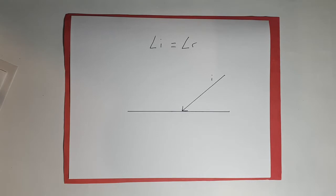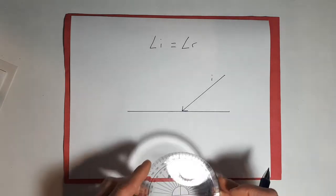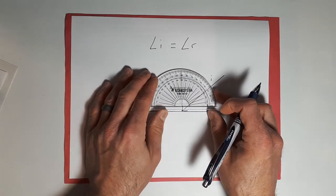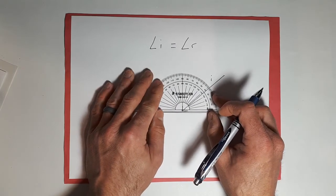Every time a ray of light hits a plane mirror, to do these diagrams, you need to make a line at 90 degrees, so that's perpendicular to your mirror.